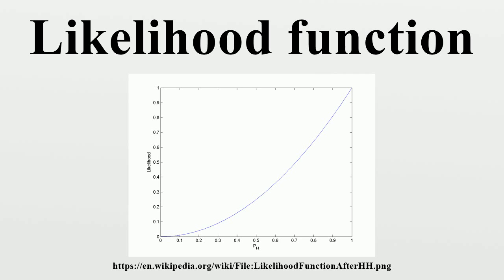Continuous probability distribution: Let x be a random variable with a continuous probability distribution with density function f depending on the parameter theta. The function considered as a function of theta is called the likelihood function. Sometimes the density function for the value x of x for the parameter value theta is written in a form that should not be confused with a conditional probability density. For discussion about making inferences via likelihood functions, see the method of maximum likelihood and likelihood ratio testing.